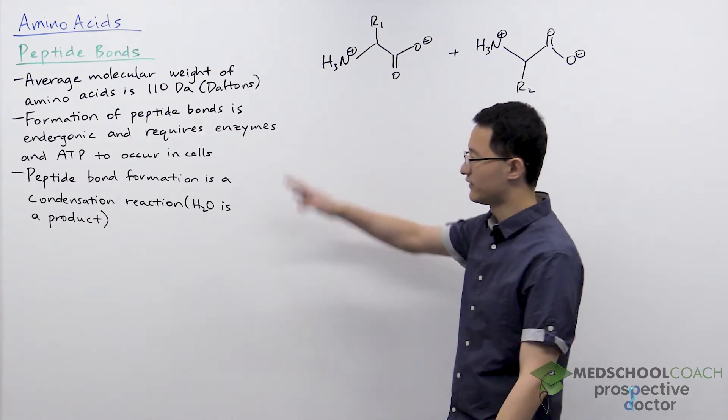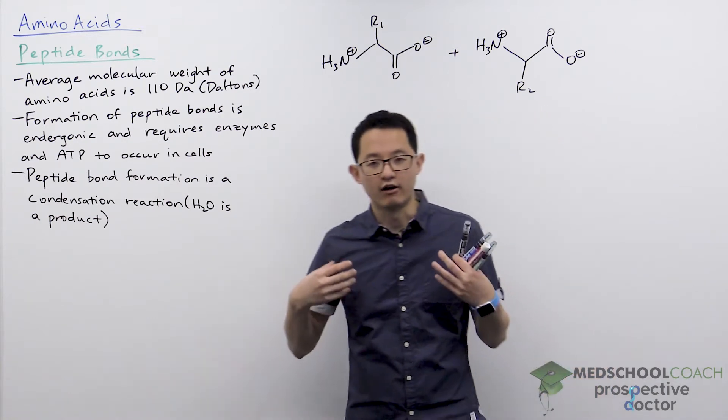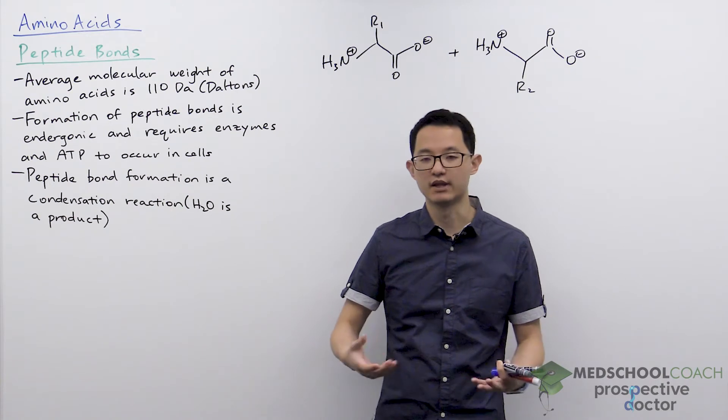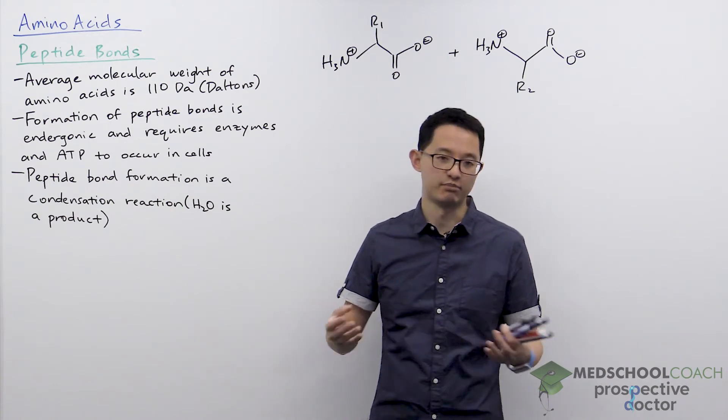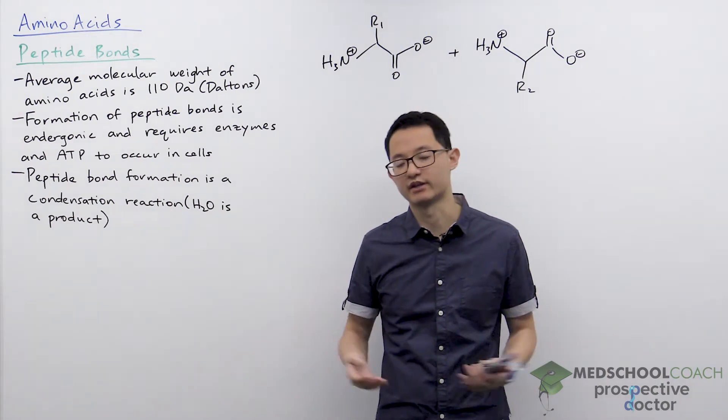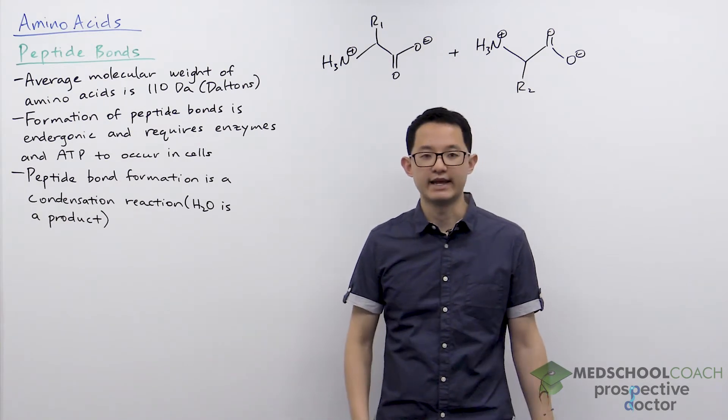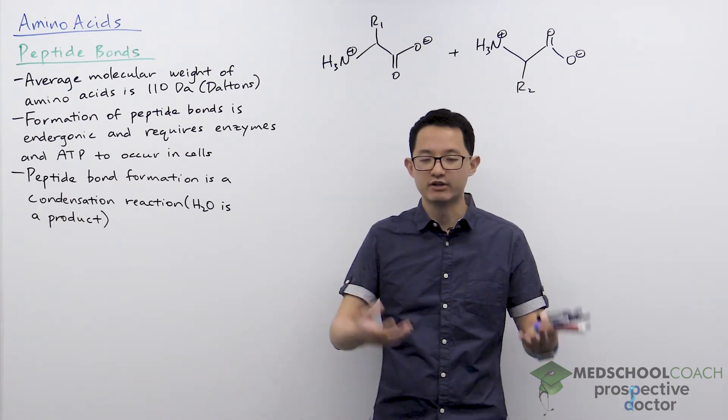The first thing I want to talk about is that there are occasionally questions on the MCAT where they tell you the molecular weight of a protein. A protein might have a large molecular weight like 6,000 Daltons, and they'll ask you how many amino acids this protein is made of.